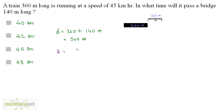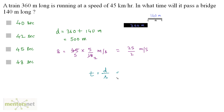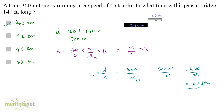The speed is 45 kilometers per hour, which is 45 times 5 by 18 meters per second. Since 9 times 5 is 45 and 9 times 2 is 18, that's 25 by 2 meters per second. Now we have the speed and the distance, so time equals distance upon speed: 500 divided by 25 by 2, which is 500 times 2 by 25, giving 1000 by 25, equal to 40 seconds. Option 1 is the correct answer: 40 seconds.